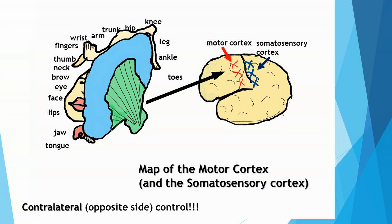We are looking at the motor cortex on that brain, right in front of the central fissure, and then you're seeing a map of the motor cortex. This shows the parts of the body that are controlled by different portions of the motor cortex. Those body parts look a little odd because some parts are drawn very large and others very small, showing proportionately how much brain tissue is devoted to movement of those body parts.